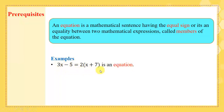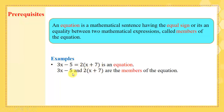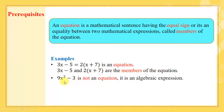It is an algebraic expression having an equal sign. It has a left side, which is 3x minus 5, and a right side, which is 2 times x plus 7. These two sides are called the members of the equation. While 9x squared minus 3 is not an equation — it is an algebraic expression since it has no equal sign.